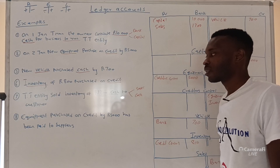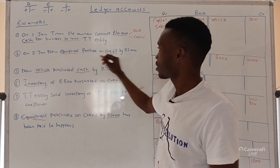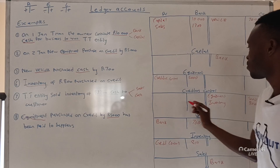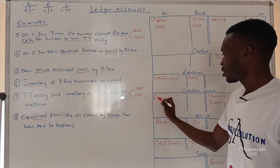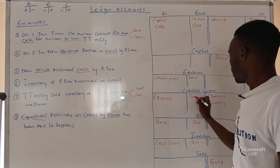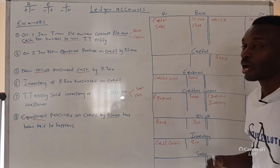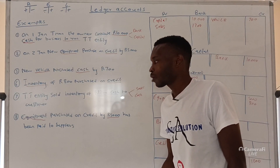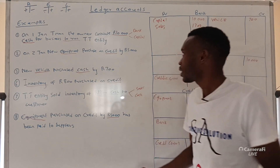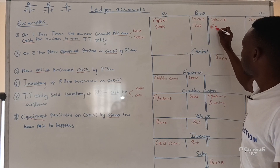Transaction six: the equipment purchased on credit for R5,000 has now been paid to the supplier. Because equipment has been paid, liability must go down — we debit creditors control R5,000. We don't reduce the equipment account; we reduce bank, because we paid through cash held in our bank. So we credit bank R5,000, indicating our bank is going down because we paid for the equipment.